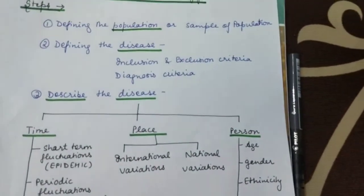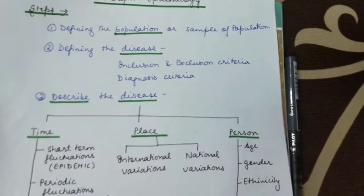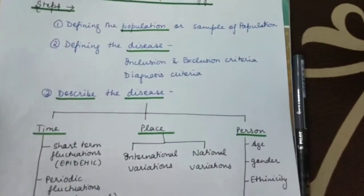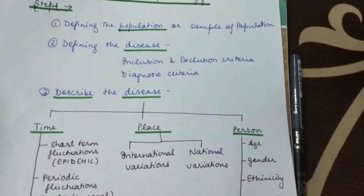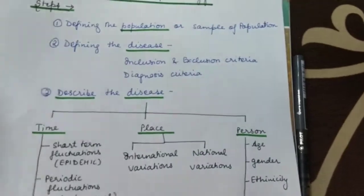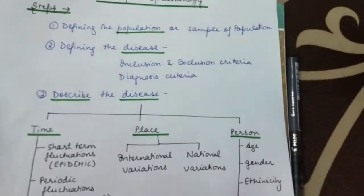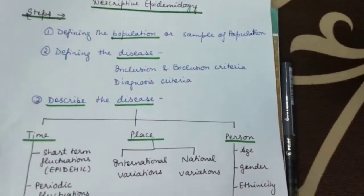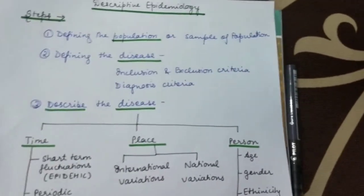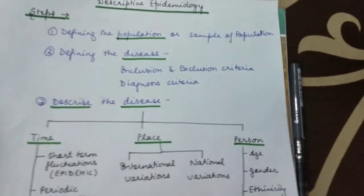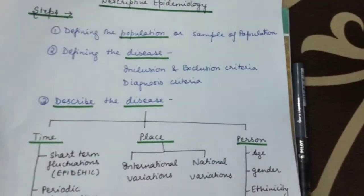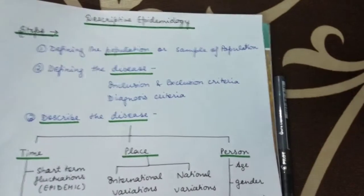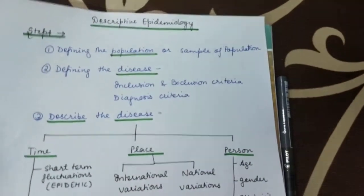For defining the disease, you have to choose certain inclusion criteria and certain exclusion criteria. Inclusion refers to the people who you will choose, and exclusion refers to people who you will remove — those not suitable for your study, like certain age groups, certain gender, or certain groups of people. You have to include as well as exclude accordingly.